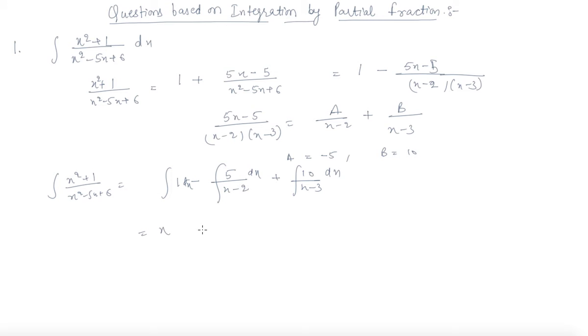So this is x minus 5 times log of x minus 2 plus 10 times log of x minus 3. So by simply adding c, I will get the integration constant. So this is the integral of this whole rational fraction that is given to us.